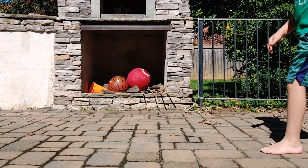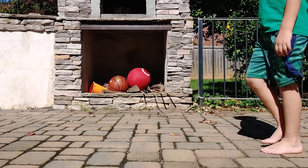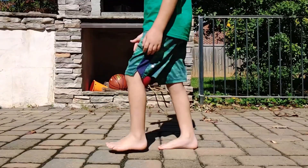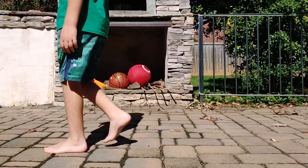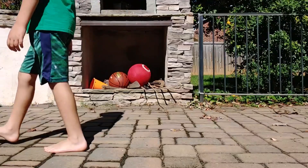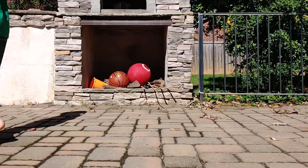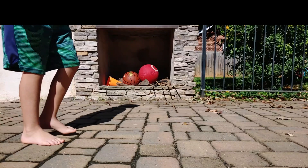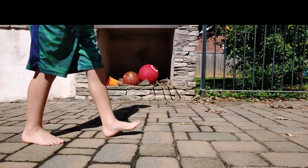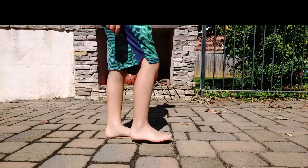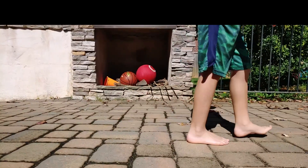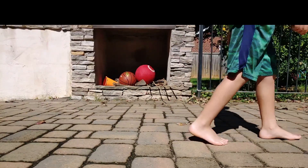On number three, we look at his foot position at mid stance. This is when you're walking and your foot's down on the ground and your knee is straight over your foot. In this position, he has a normal roll over from his heel to his toe on each leg, so he gets three points on each leg.